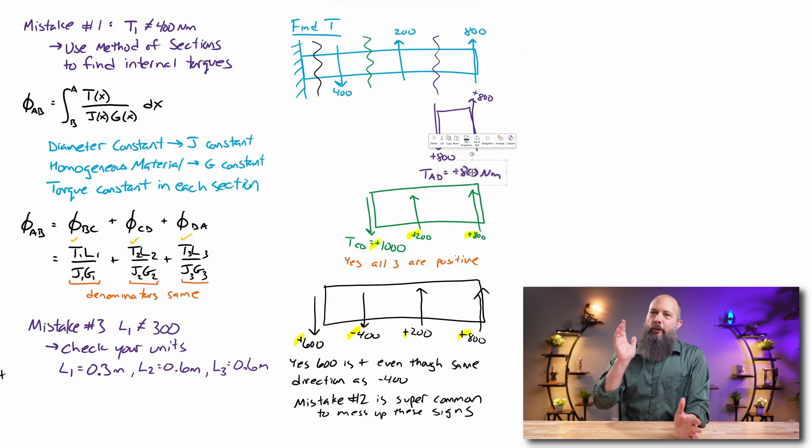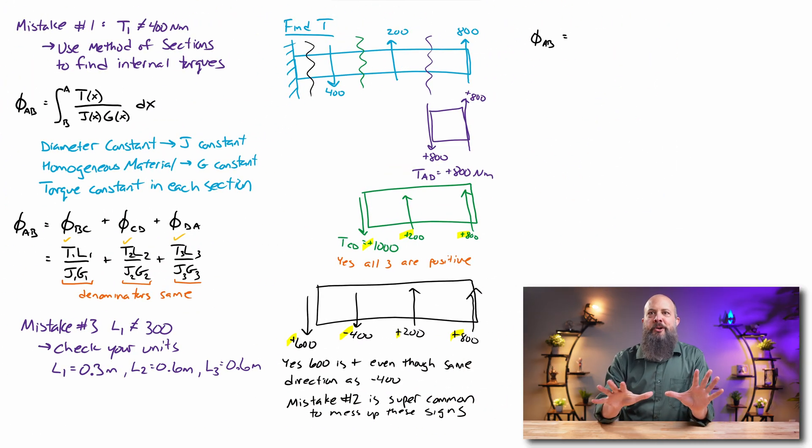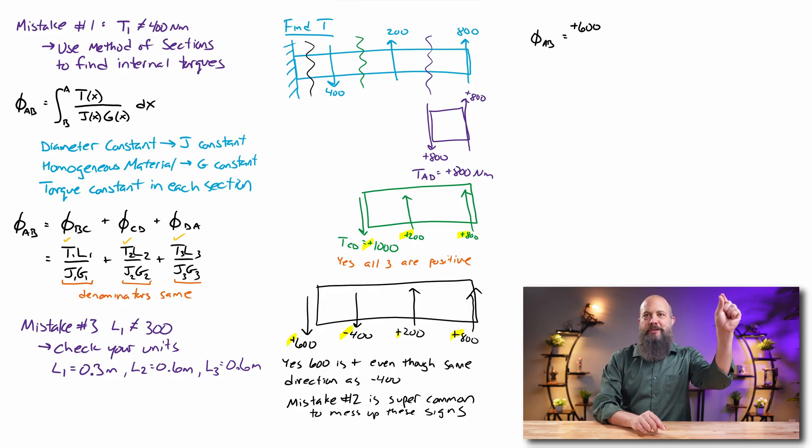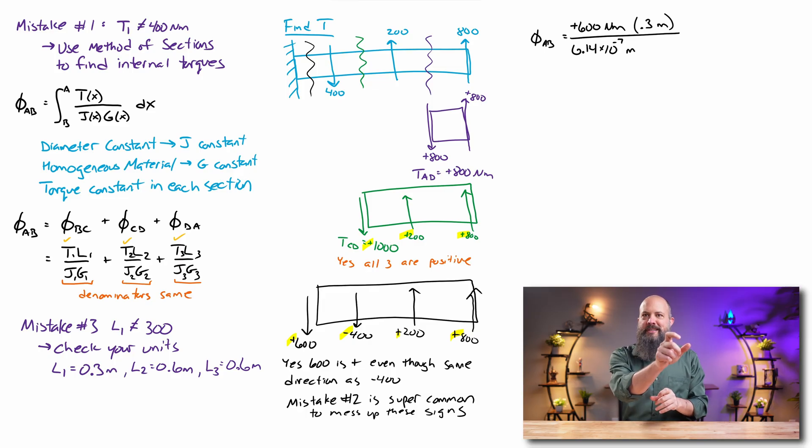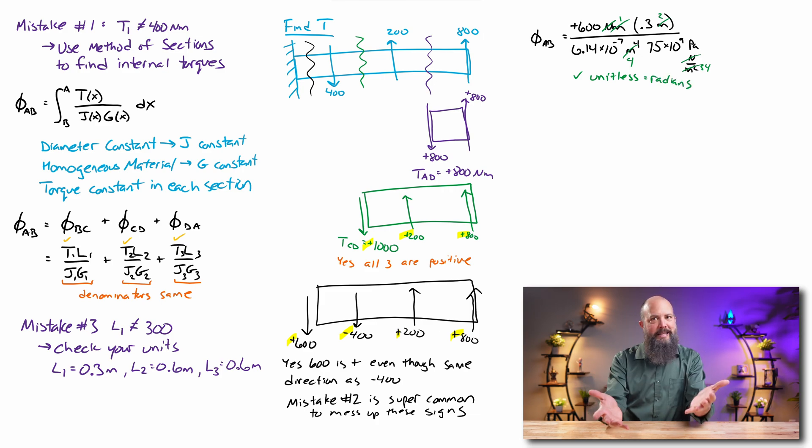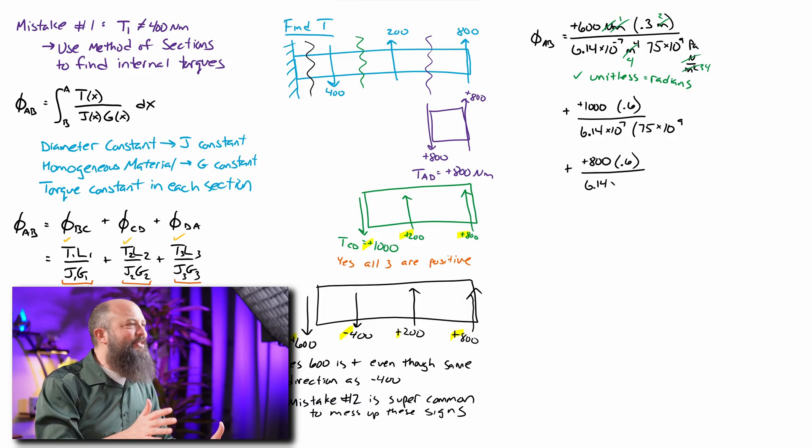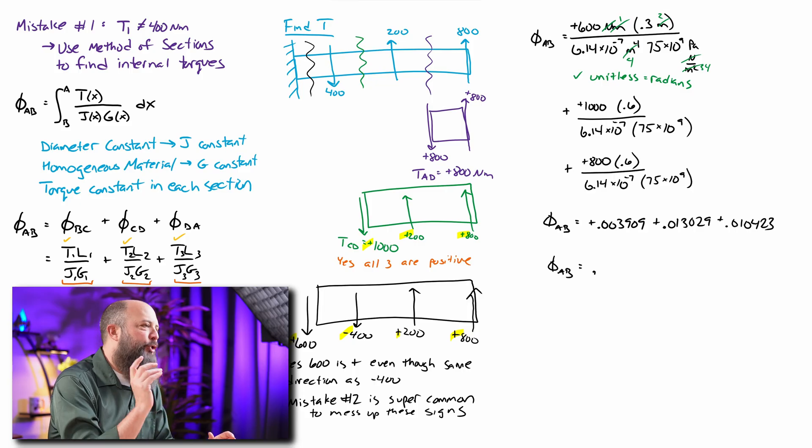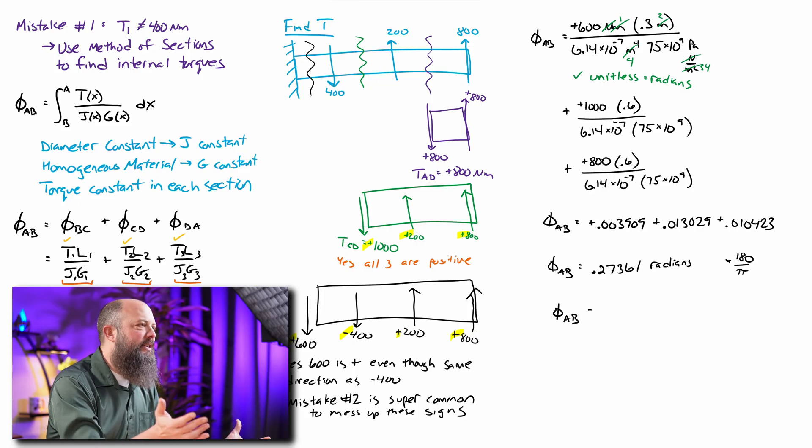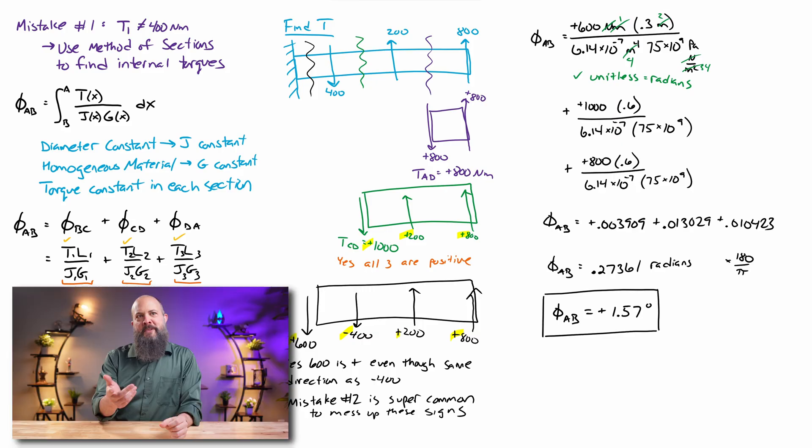All right, plug everything in. I want to check my units to make sure that I've actually got them all correct. So, I've got newtons cancels off from the top and the bottom. I count, I've got two meters up in the top, and I've got a meter squared in the like denominator of the denominator. So, those do cancel out the meters forth, which is good. This angle should be unitless, which means that it's in radians. Plug in all my numbers, 0.27 radians, so convert that to degrees. Positive 1.57 degrees as the angle of twist for the entire shaft from A to B.